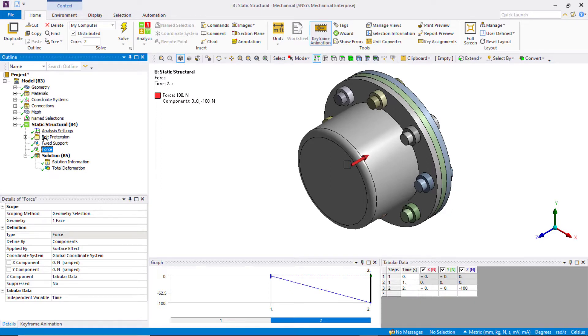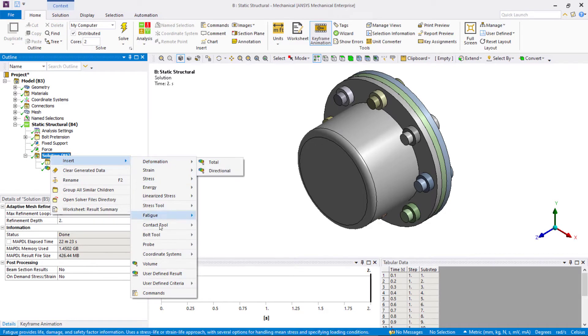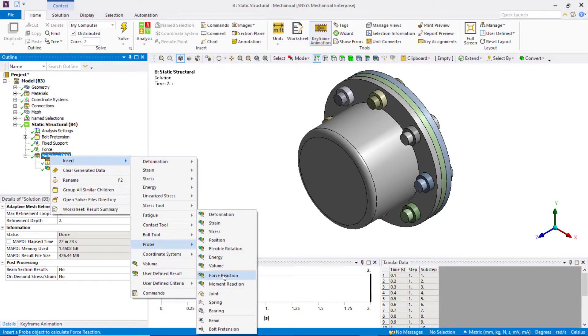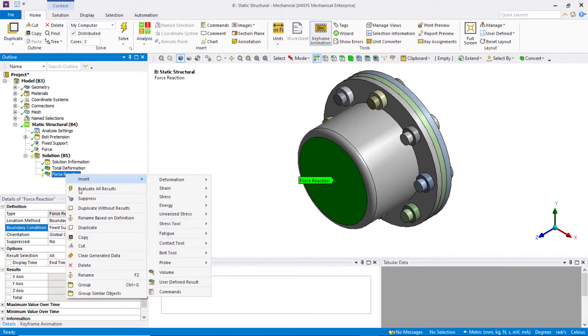Force reactions can be extracted using force probes that can be scoped to several items such as edges or faces via geometry selection or from boundary conditions such as supports and displacements, remote points and many more options. This probe grabs all the nodes that fall under the scoping and reports back the summation of their forces.